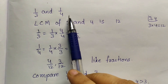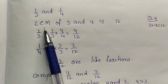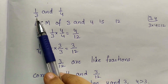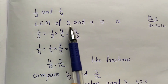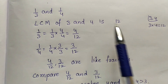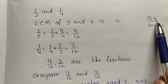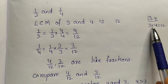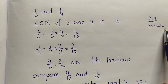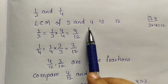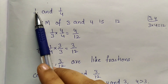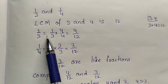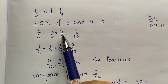We have 1 by 3 and 1 by 4. We have to find the LCM of the denominators 3 and 4. We do not have any common factors, so 3 into 4 equals 12. 12 is the LCM of 3 and 4. To convert them into like fractions, for 1 by 3 we have to make the denominator 12.